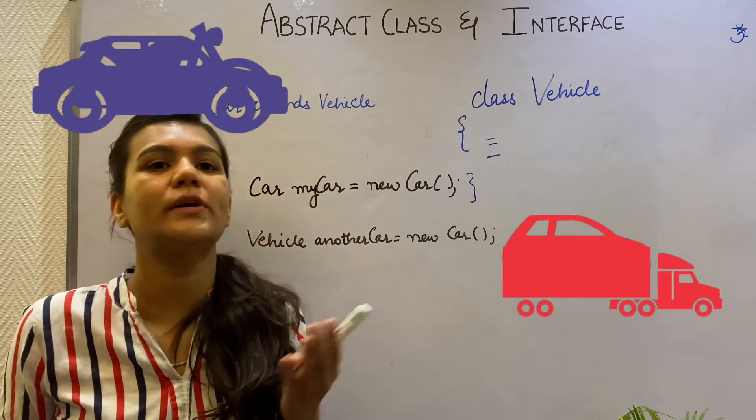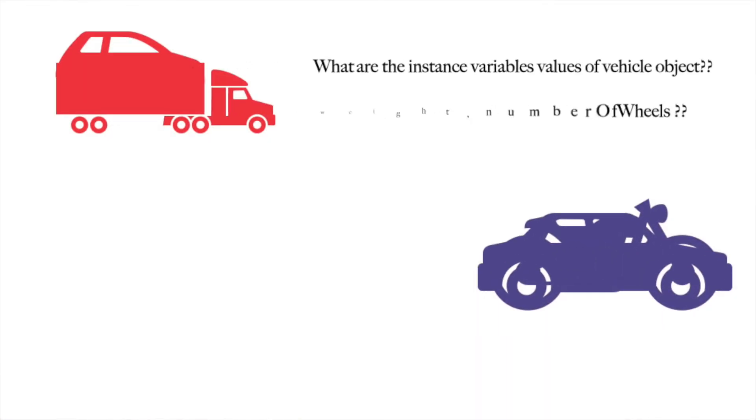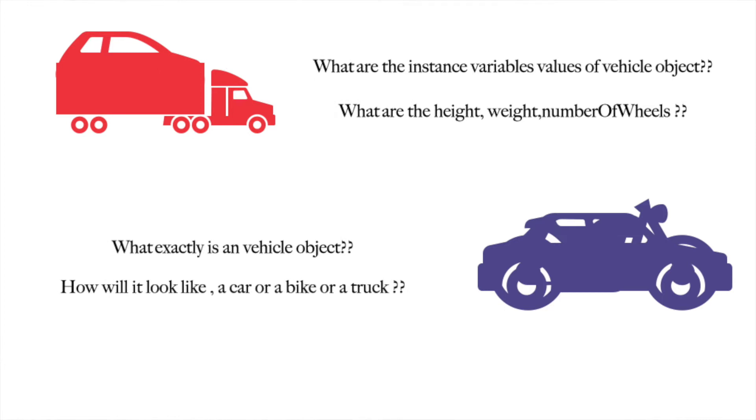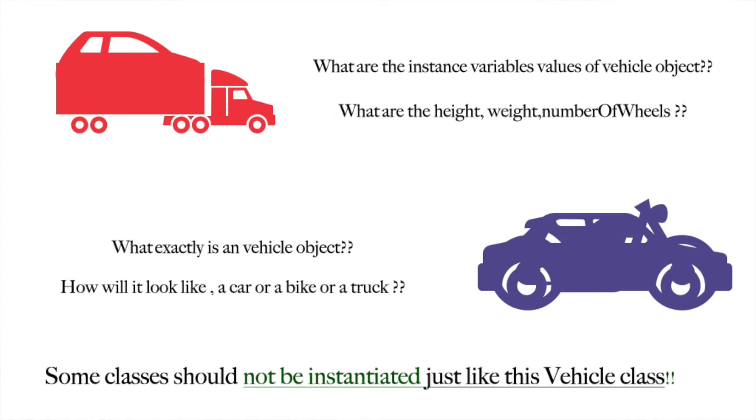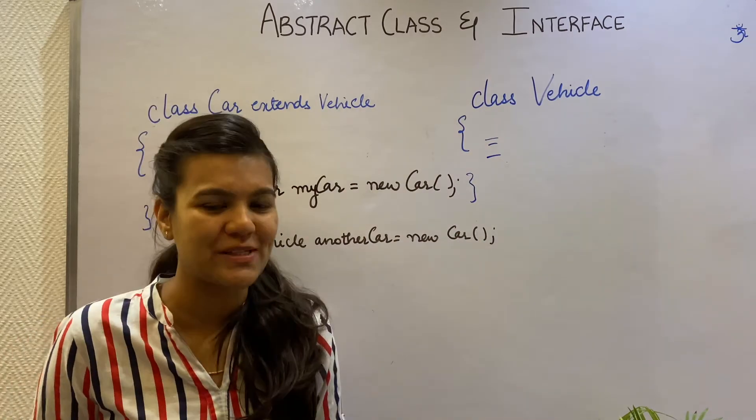It might look like this or it might look like this. So I also don't know how the instance variables of a Vehicle class look like. Some classes are not meant for creating instances but only meant for inheritance and polymorphism, and yes, Vehicle is one of those classes.